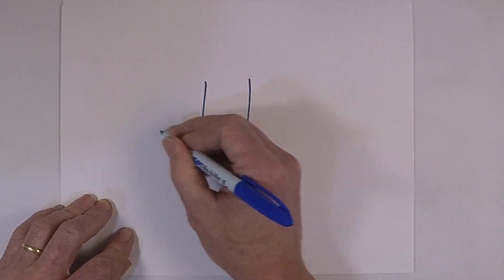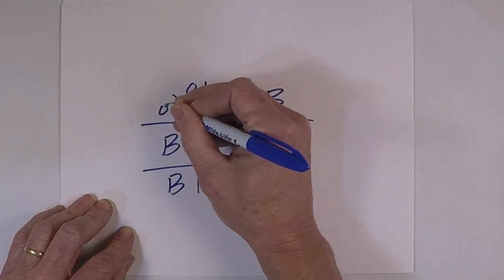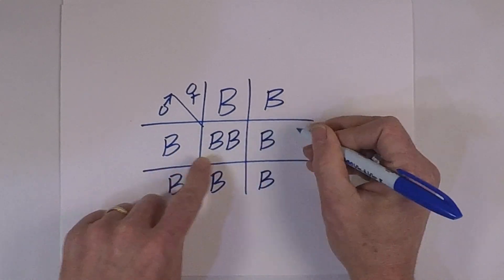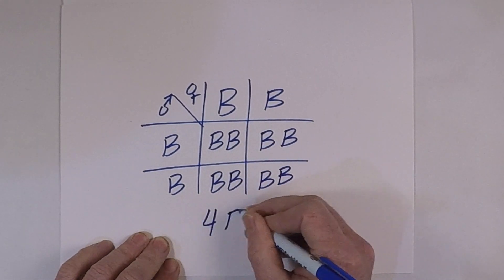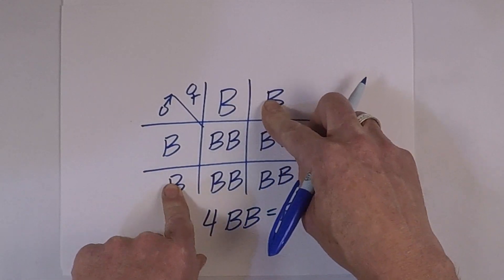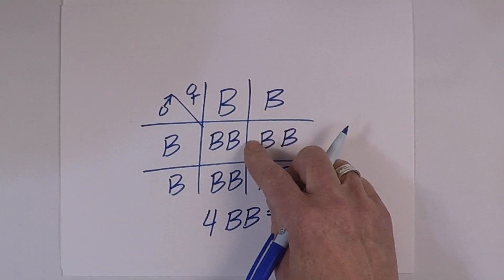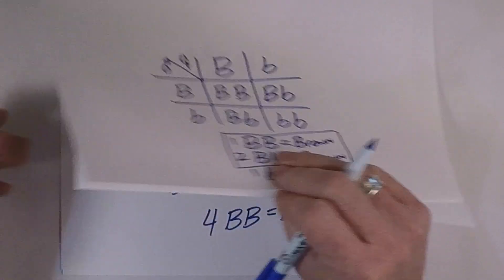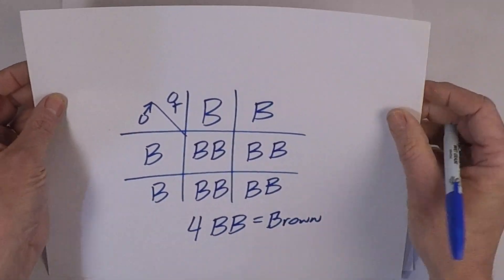Here's another combination: big B, big B crossed with big B, big B. Mom gives big B, big B; dad gives big B, big B. All four offspring are big B, big B — all brown bunnies. These parents will never ever have a white baby, because there is no little b to pass on.